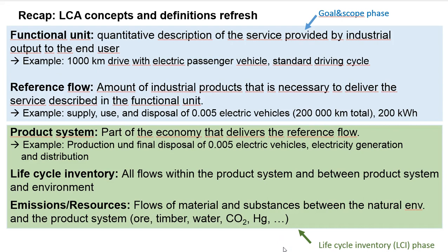Before we start, a short recap on basic LCA concepts. The functional unit is a quantitative description of a certain service by an industrial output to the end user — for example, a thousand kilometer drive with an electric passenger vehicle in a standard driving cycle. The reference flow indicates the amount of industrial products needed to deliver the service. To drive a thousand kilometers with an electric vehicle I need roughly 200 kWh of electricity, but I also need the vehicle itself, broken down according to the total kilometrage over its lifetime.